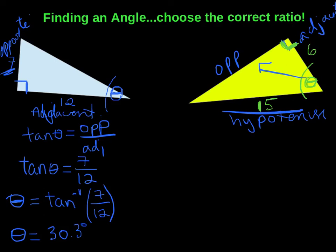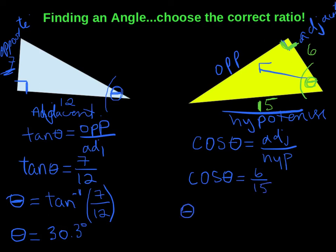So the two sides that I care about or that are important to me are the adjacent and the hypotenuse. So which trig ratio am I going to use? Well, I am going to use cos theta equals adjacent over hypotenuse. Now fill in the numbers that we know. Cos theta equals 6 over 15. And you're going to do the same thing as we did in the example just right next door to us. So in order to isolate theta, we need to use our second function cos. So cos inverse 6 over 15. And that gives us an angle of 66.4 degrees.